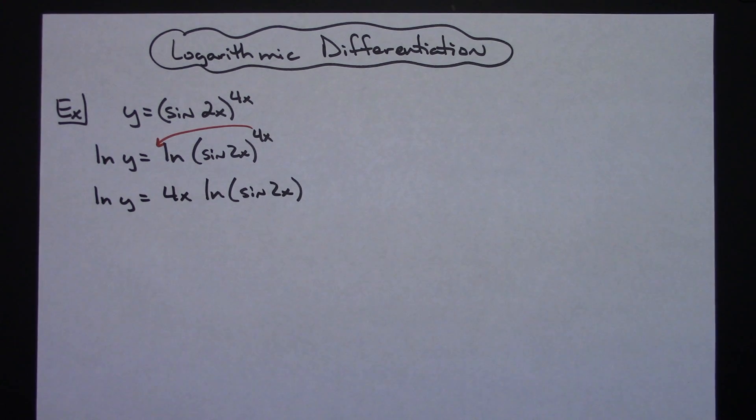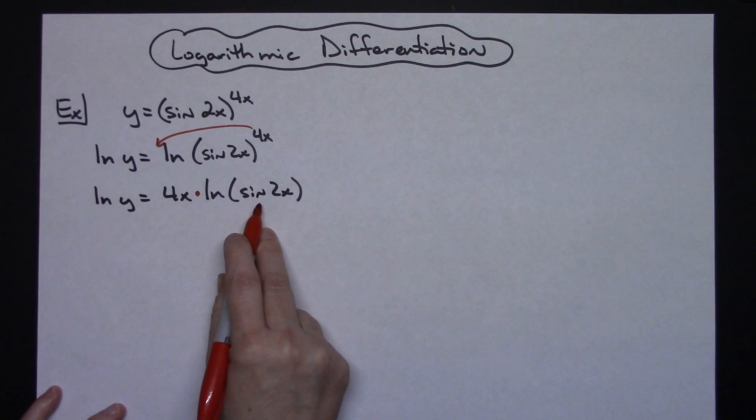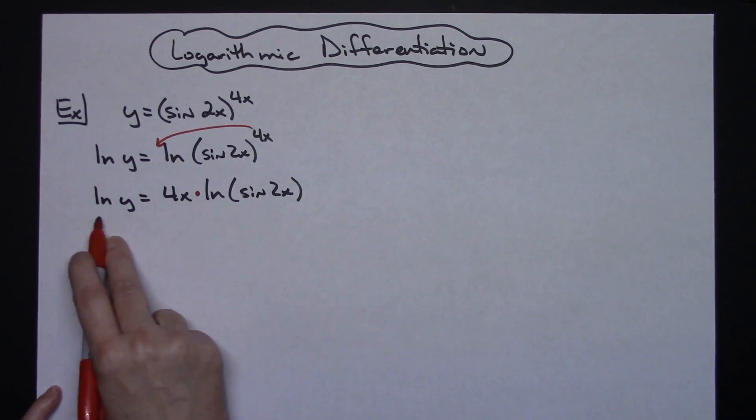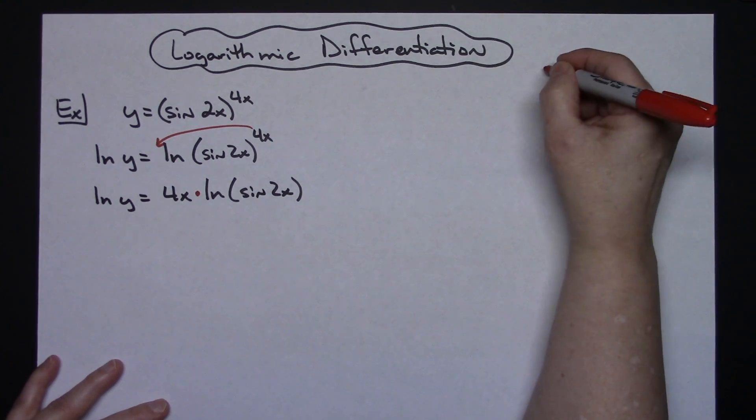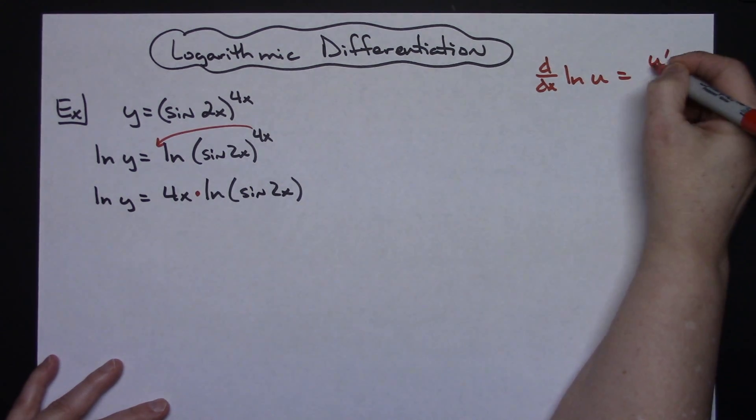At this point in time, you need to take the derivative of both sides. Keeping in mind over here, I've got a product going on. Now hopefully somewhere you have memorized that d/dx natural log of u is u prime over u.